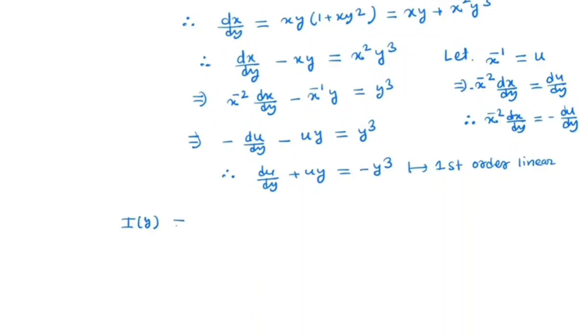So in this method first we will find the integrating factor. The integrating factor I(y) will be e to the power of the integral of the coefficient of u, which is y dy. So it is nothing but e to the power y squared by 2.